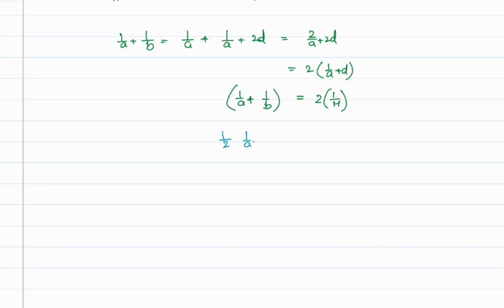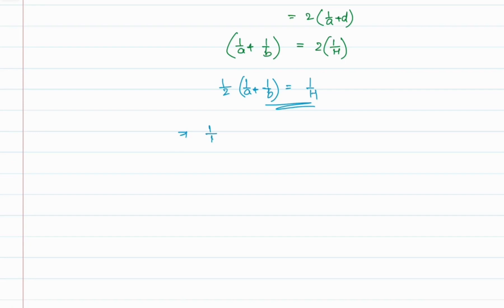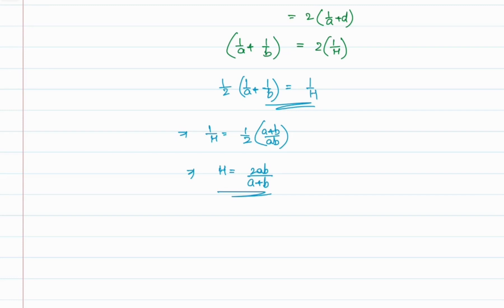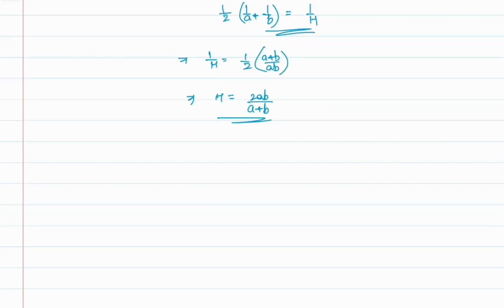Dividing both sides by 2 gives (1/2)(1/a + 1/b) = 1/H. We can write this as 1/H = (1/2) times (a + b)/(ab). Taking the reciprocal gives H = 2ab/(a + b). So when we know two non-zero numbers a and b, the harmonic mean is given by H = 2ab/(a + b).